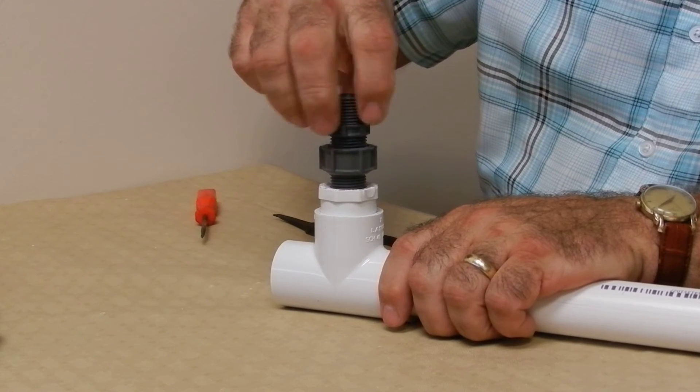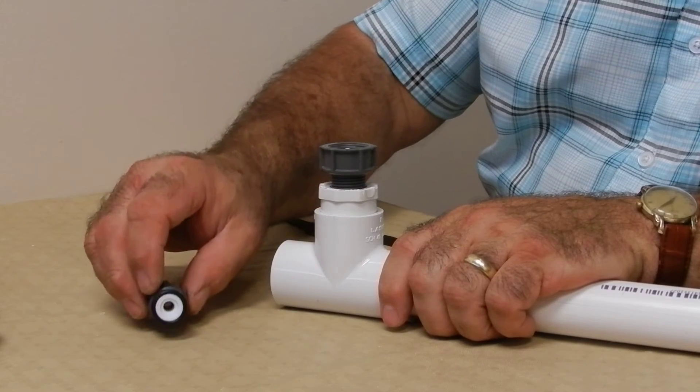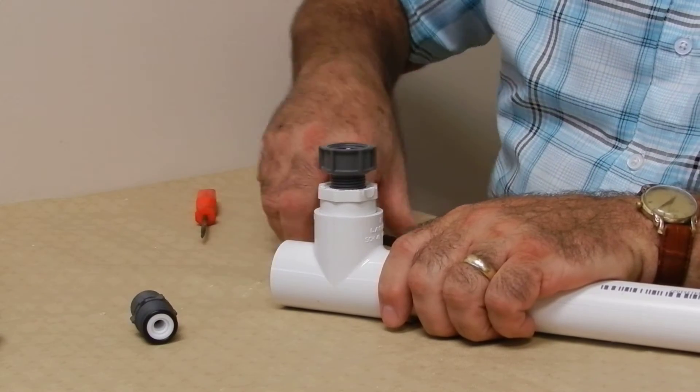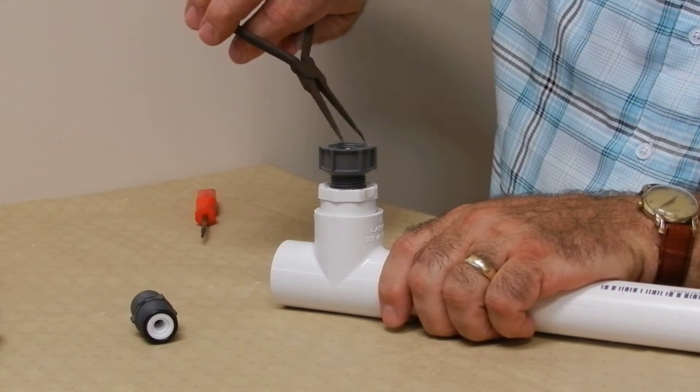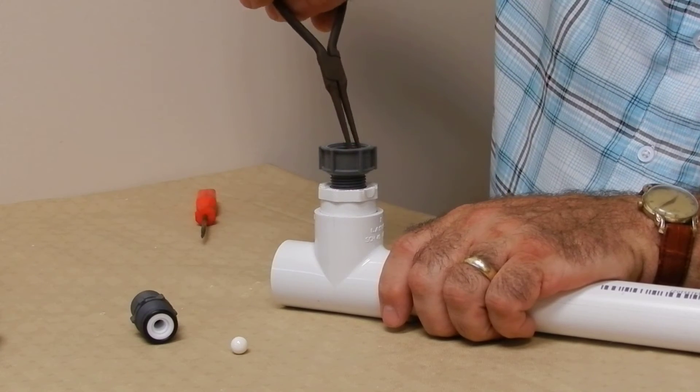Remove the tube adapter. Inside you'll see a white nylon seat and a black rubber O-ring. Inside you'll find a ceramic ball and a stainless steel spring.